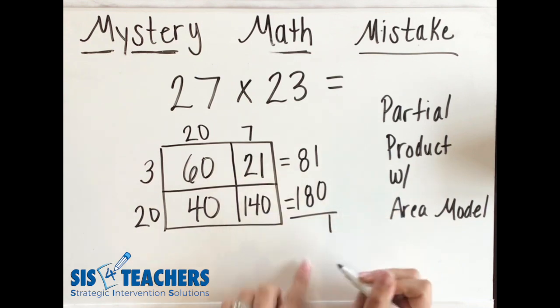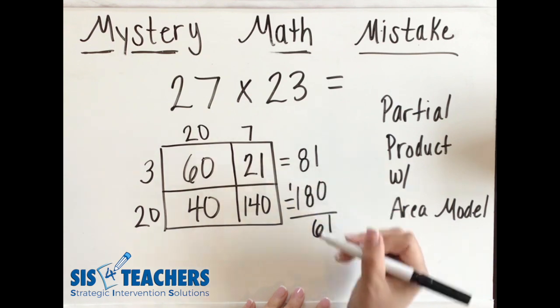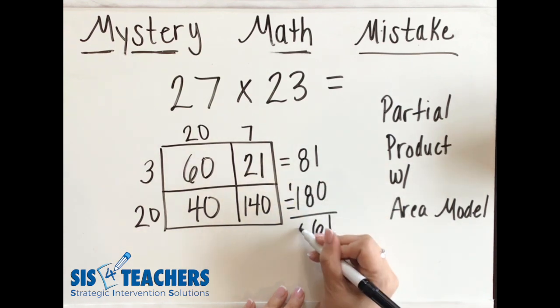I'm going to try to line up my place values here so I can see it. 8 plus 80 plus 80 is 160 so I'm going to bring my 100 over. 100 plus 100 is 200.